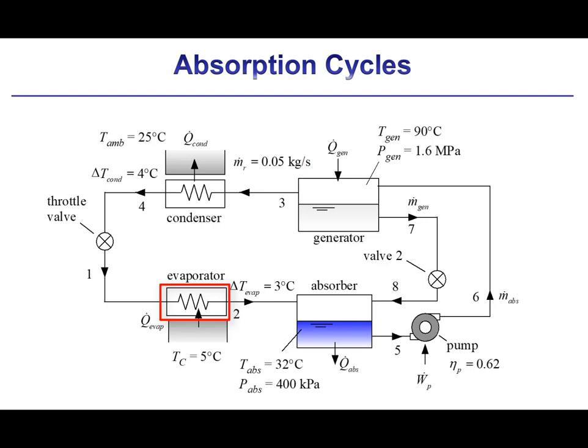The condenser rejects heat to ambient at 25 degrees Celsius and it has an approach temperature difference of 4 degrees Celsius. The evaporator removes heat from a space that is at 5 degrees Celsius and it has an approach temperature difference of 3 degrees Celsius. The absorber operates at 32 degrees Celsius and 400 kilopascals.